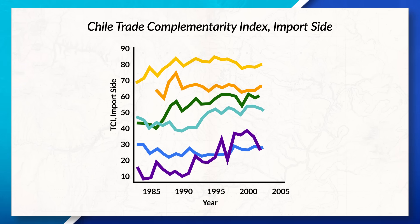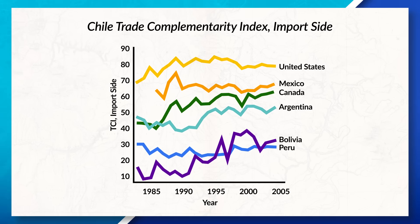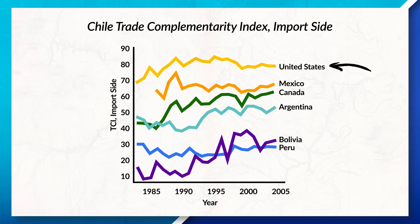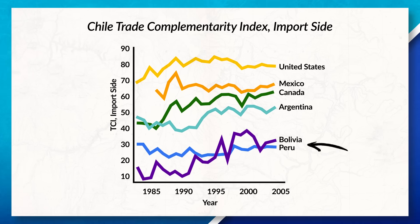By looking at data from the World Trade Organization, we can see that Chile and the United States are the most compatible trade partners, while Bolivia and Peru are the least compatible. So it would make more sense for Chile to trade with countries in North America, even though countries in Latin America are geographically closer.